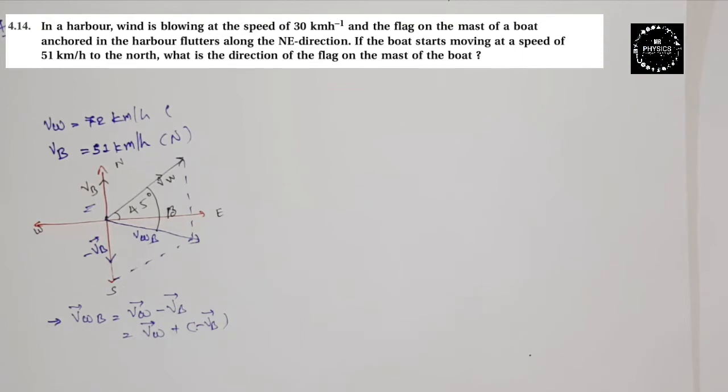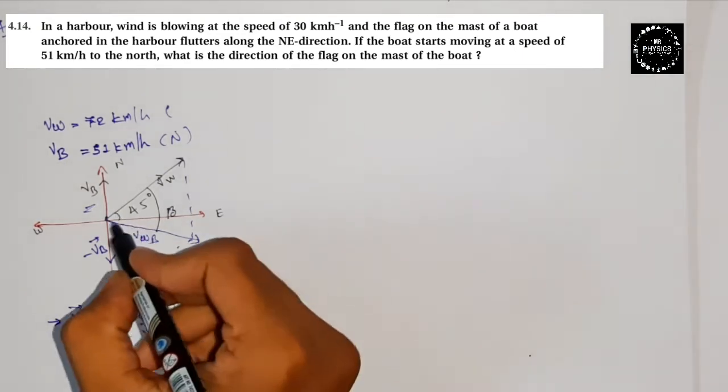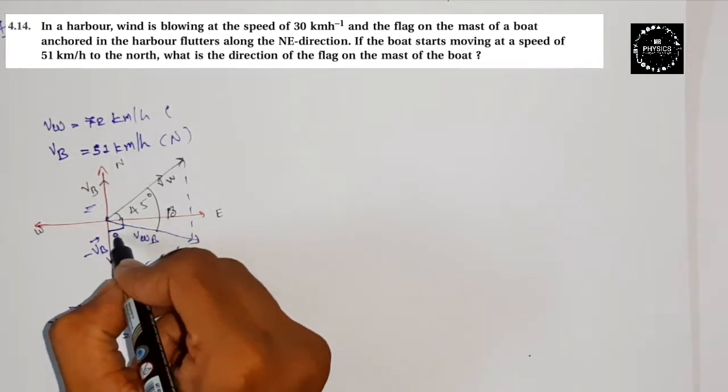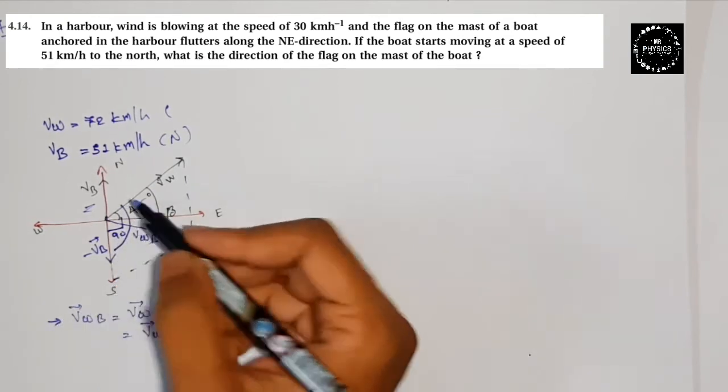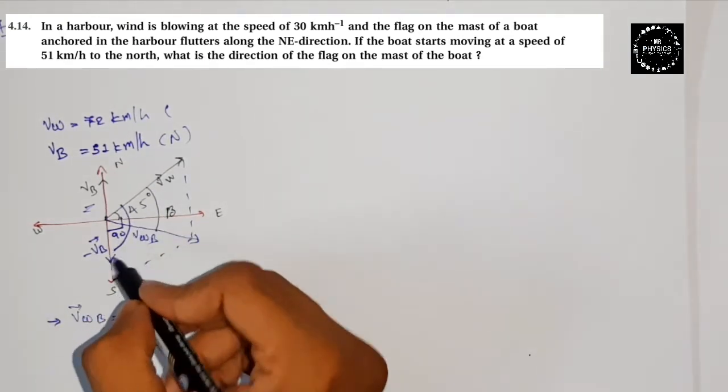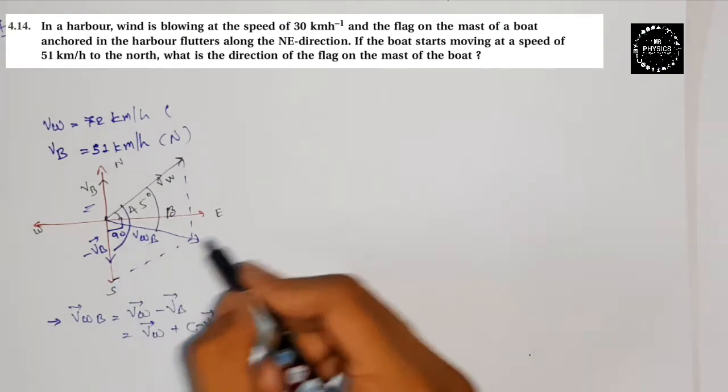This angle, let's consider it beta, which we need to define. The direction of the flag. What was the question? What is the direction of the flag? The flag is going in this direction, so we need to define this angle. Now see, this is 45 degrees. This is 45 degrees.